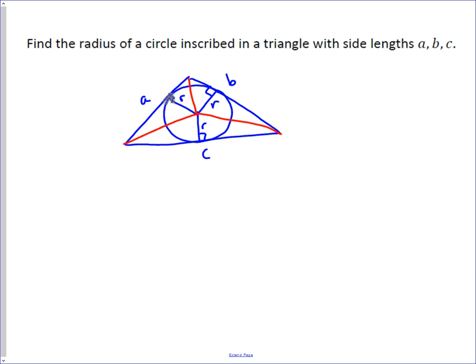And I can find the area of this triangle. And so in this case, the area of the triangle is going to be one-half times A times R. So that's one-half the base times the height, plus one-half B times R, plus one-half C times R.